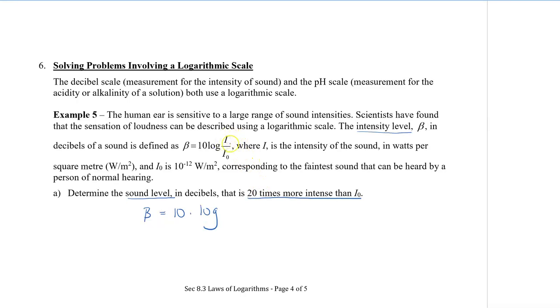So we have β is equal to 10 times log, and here it says that it is 20 times more intense than i₀. So we know that the i is going to be 20 i₀ divided by i₀. Now it might be a little bit confusing to figure out which sound level are we talking about. But because it says here in decibels, we know that the β is measured in decibels. Whereas the i, the intensity, is measured in watts per meter squared. So, simplifying this i₀ here, we now have 10 times log 20.